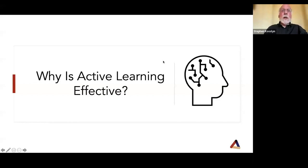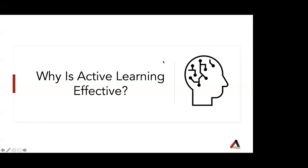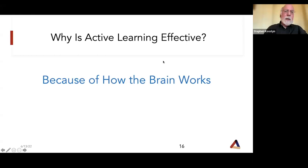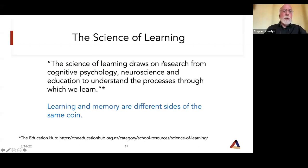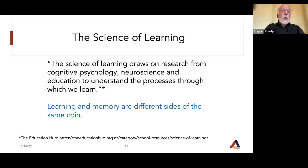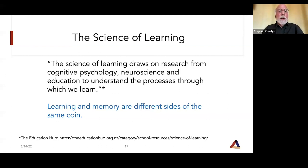Active learning is effective because of how the brain works — that's the simple answer. The science of learning draws on research from cognitive psychology, neuroscience, and education to understand the processes through which we learn. An important conceptual point: learning and memory are different sides of the same coin. Learning is about taking information in, and if you didn't have memory — which is about retaining it — the learning may as well have not occurred. You can't really have learning without memory, and you can't have memory without learning.